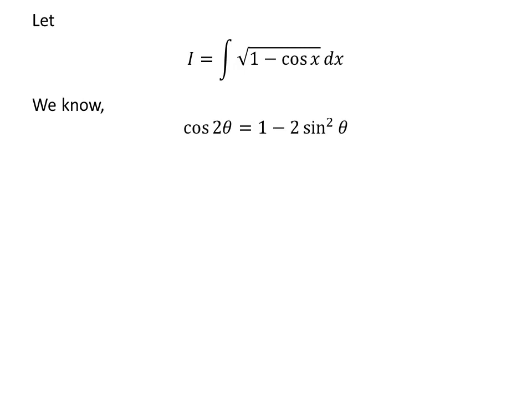We know the famous identity: for any angle theta, cosine of 2 theta is equal to 1 minus 2 times sine squared of theta.